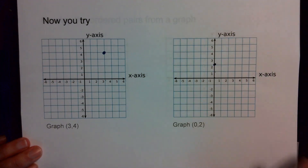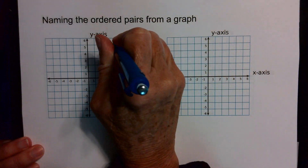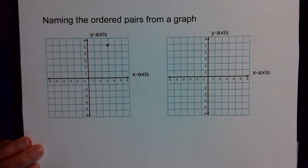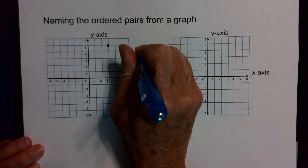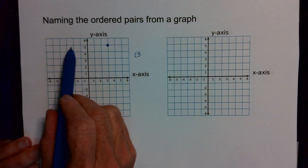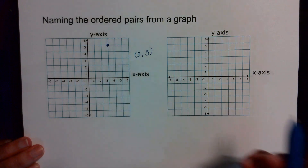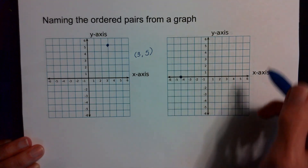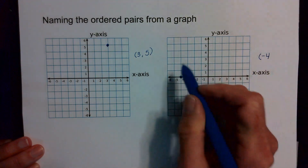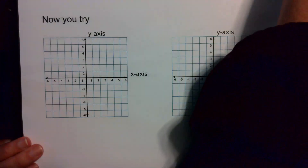Now you also have to be able to go backwards. If you have a point on the coordinate plane, you have to be able to look at it and name it. I find out where it lines up on the x — it lines up at three, so my x value is three — and on the y it lines up at five, so this point is (3, 5). If I had this point over here, I've gone over negative four on my x-axis but didn't go up or down, so it is the point (negative 4, 0).